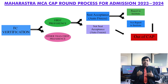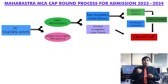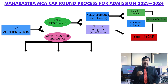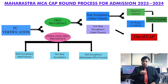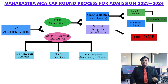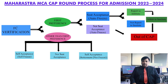If the first college is not allotted to you, then you have to go for other than first preference. In case of other than first preference, there are three options available to you: the first option is seat acceptance, that is called self freeze; the second option is not seat acceptance; and the third option is seat acceptance but you can go for betterment.